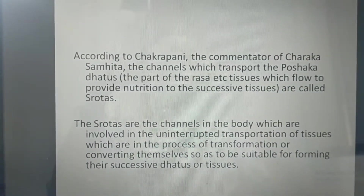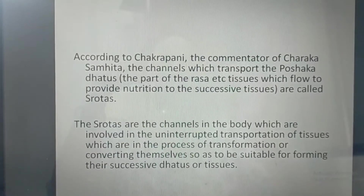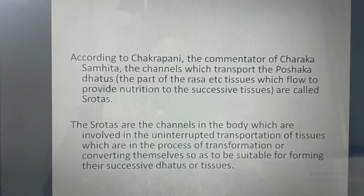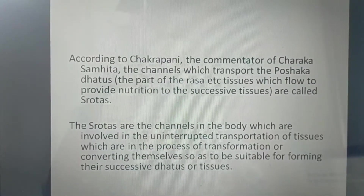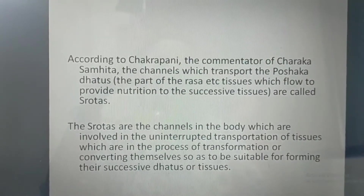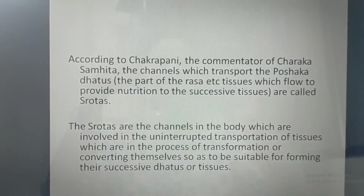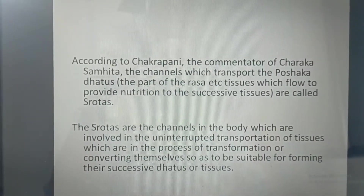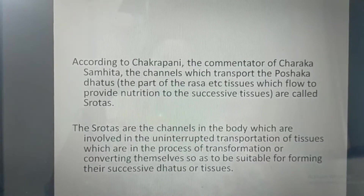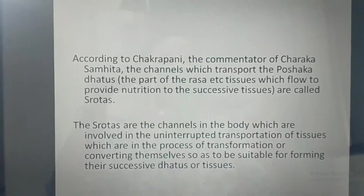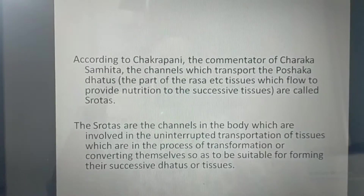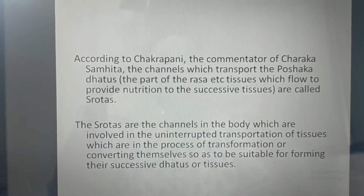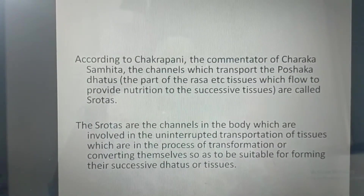According to Chakrapani — one of the commentators of the Charak Samhita — the channels which transport the Poshak Dhatus, the part of Ras etc. which flow to provide nutrition to the successive tissues, are called the Srotas. The Srotas are the channels in the body involved in the uninterrupted transportation of the Dhatu which are in the process of transformation, converting themselves to be suitable for forming their successive Dhatus or tissues.